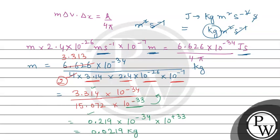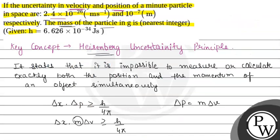Now we convert to grams: 0.0219 kg × 1000 g/kg = 21.9 grams. According to the given question, we have to answer in the nearest integer. So the nearest integer is 22. Hence, 22 grams is the final answer of this question. Hope you understood it well. Best of luck.